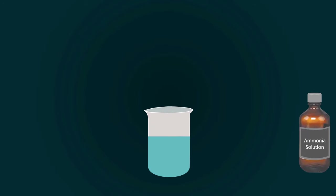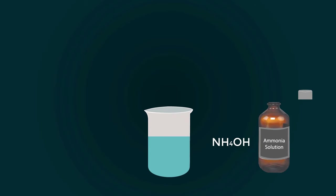Now take ammonium hydroxide, we also call it ammonia solution. Pipette out 14.3 milliliters ammonia solution and put it into this beaker.